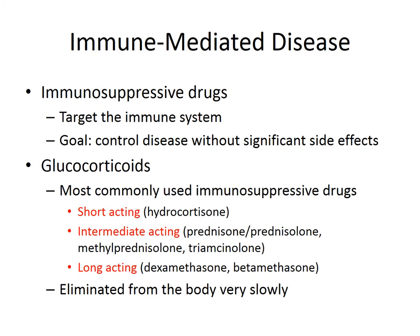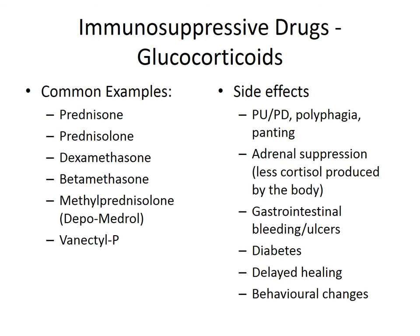Prednisone and prednisolone — remember the difference: prednisolone is the active form and prednisone is a prodrug that the liver has to convert to its active form. Cats do not do this effectively, so remember to give prednisolone if you're giving oral steroids to a cat. And for topical steroids, it will always be prednisolone — because if you're putting something on topically it won't have a chance to go through the liver to turn into the active form, so you always have to use it in its active form.